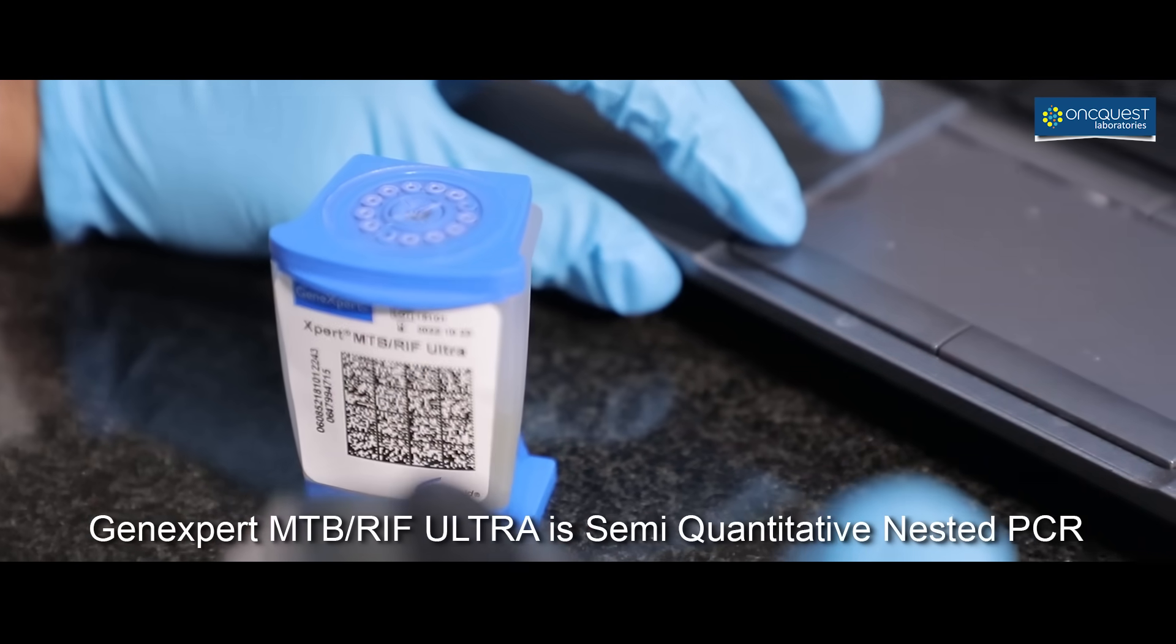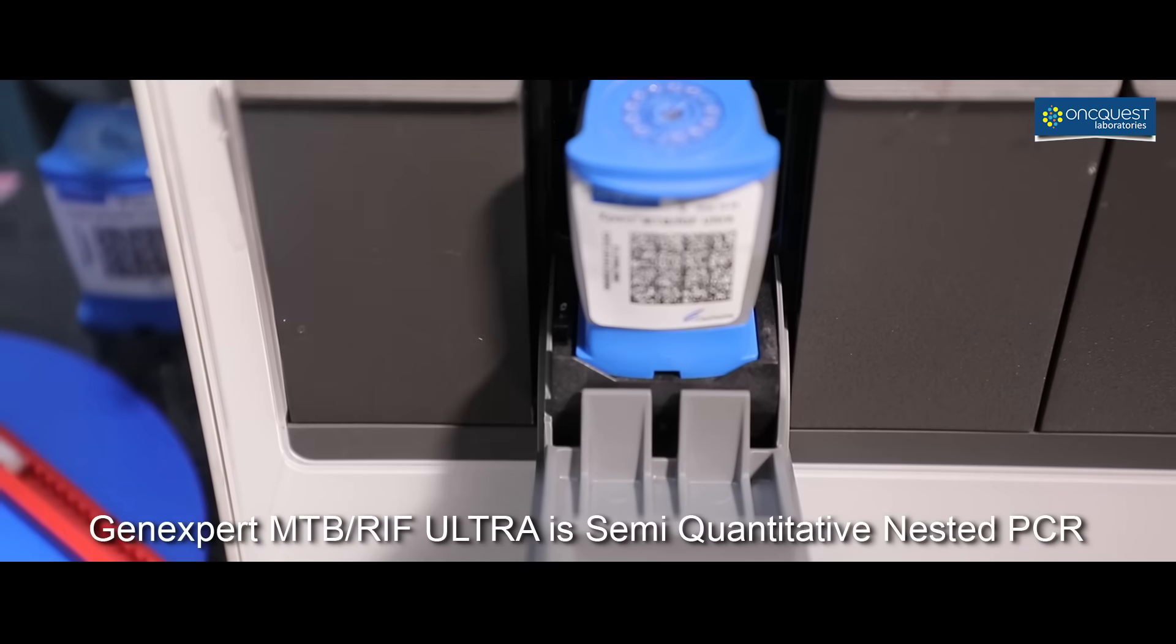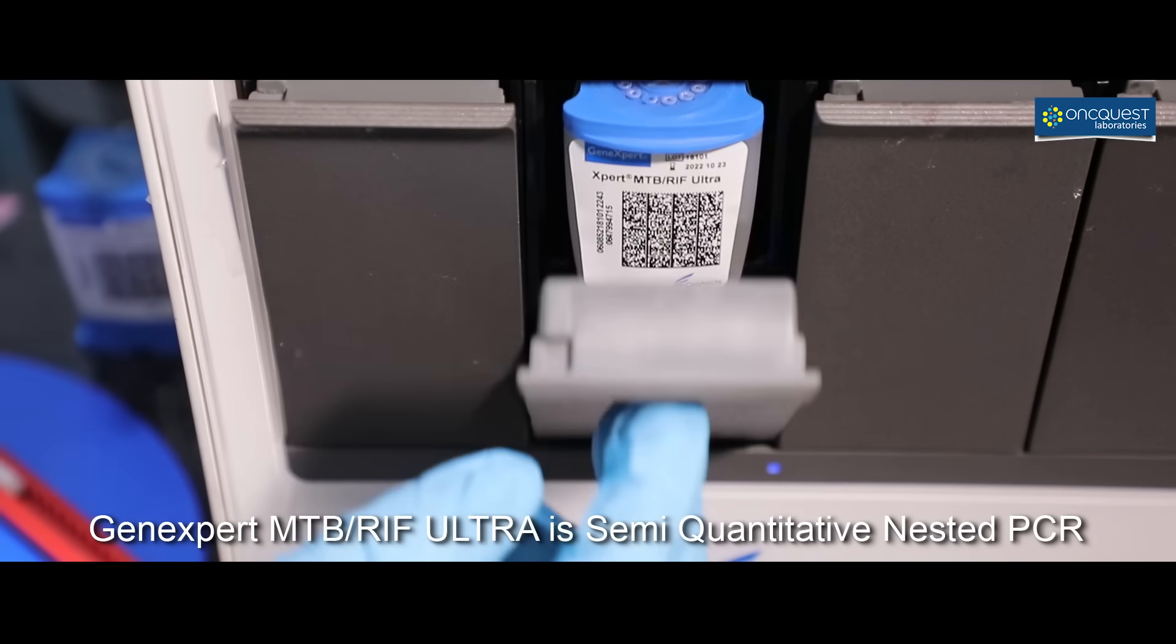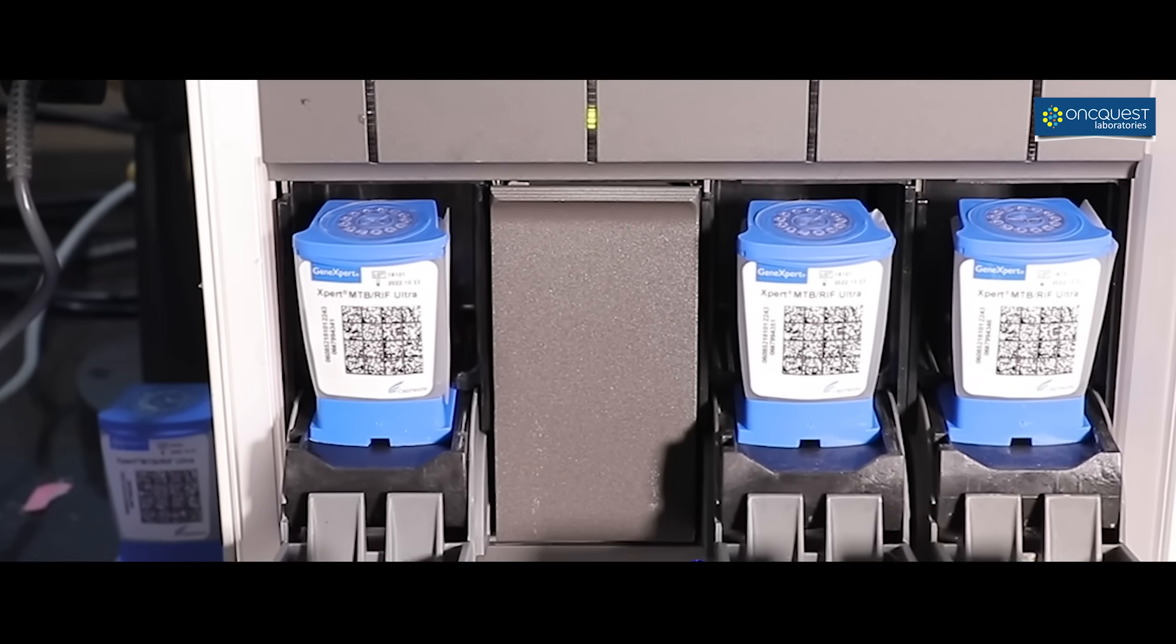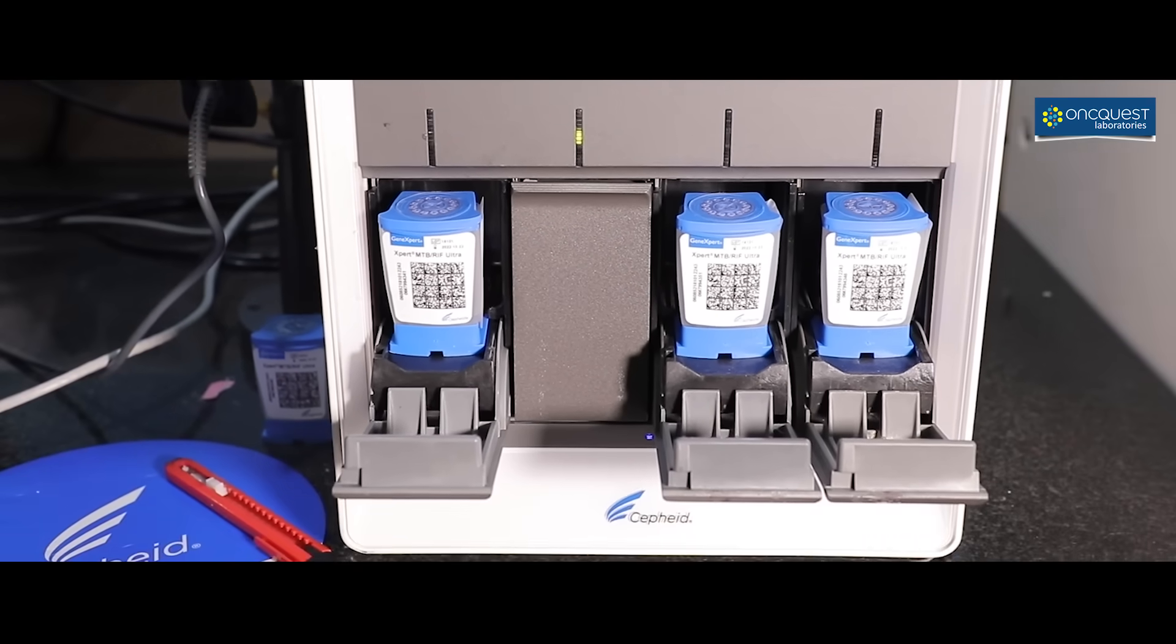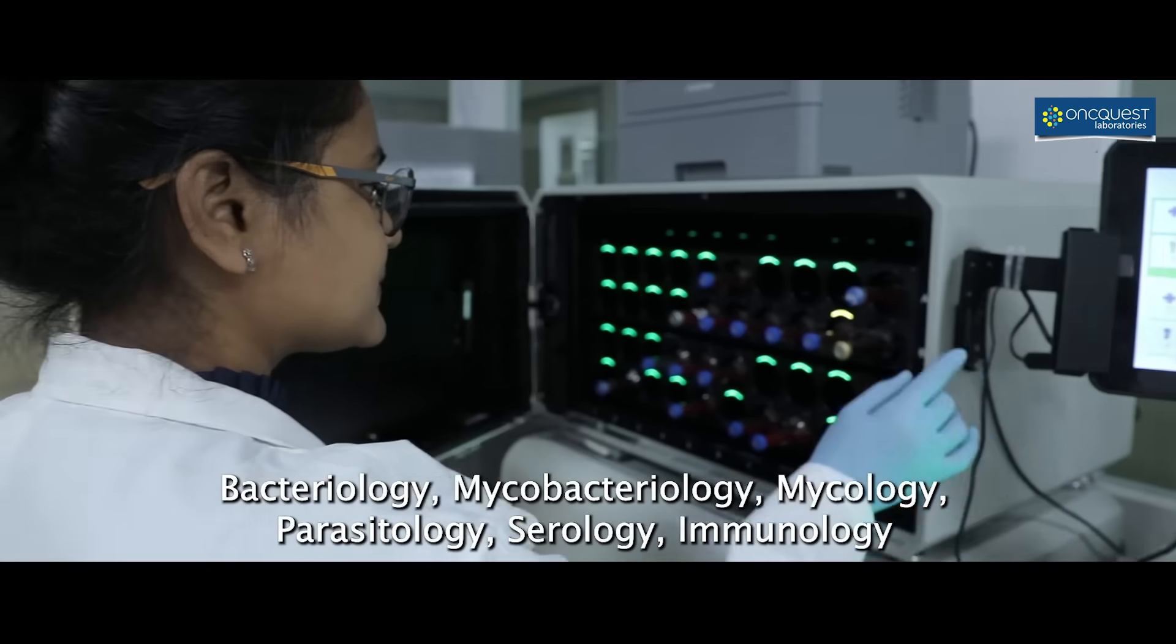GeneXpert MTB-RAF-ULTRA is semi-quantitative nested PCR with high resolution melt technology resulting in better discrimination of RPO-B mutations with a turnaround time of less than 80 minutes. It has 5% higher sensitivity than GeneXpert MTB-RAF, which impacts smear negative culture positive patients and also improves detection of mixed infections.